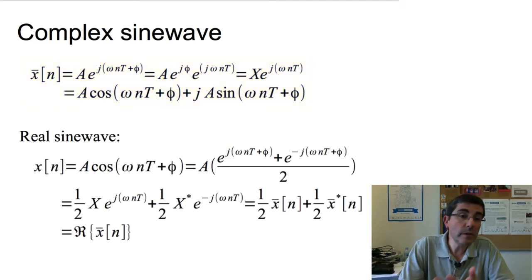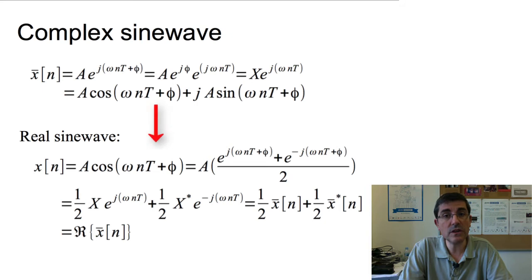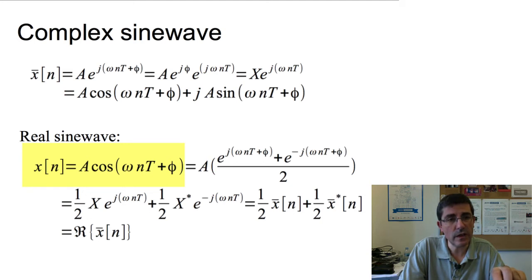We will normally be working with real signals, thus real sinusoids. And we will have to go from complex sinusoids, the ones that Fourier transform work with, to real sinusoids. So, in here, we see the equation of a real sinusoid that we saw before. So, capital A amplitude times the cosine of omega nT plus phi, can be expressed with the sum of complex sine waves.